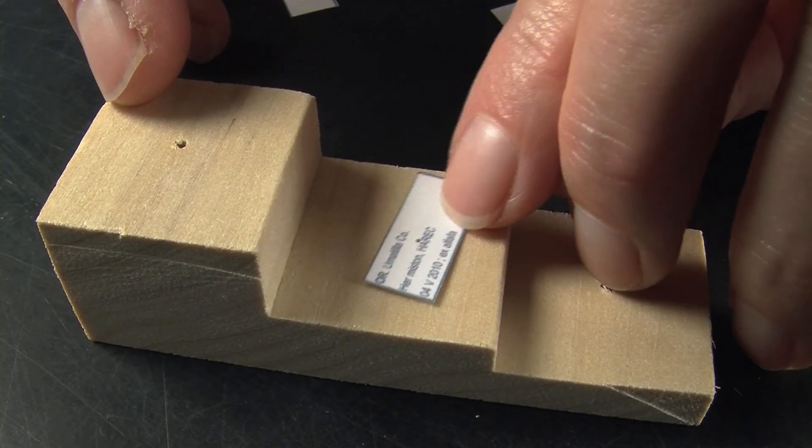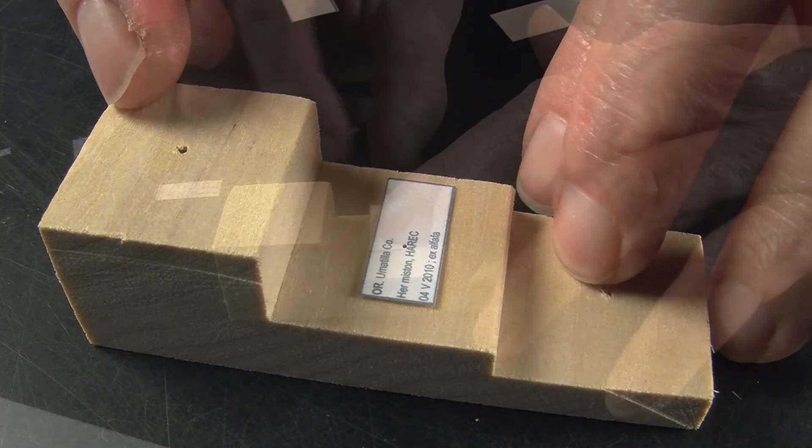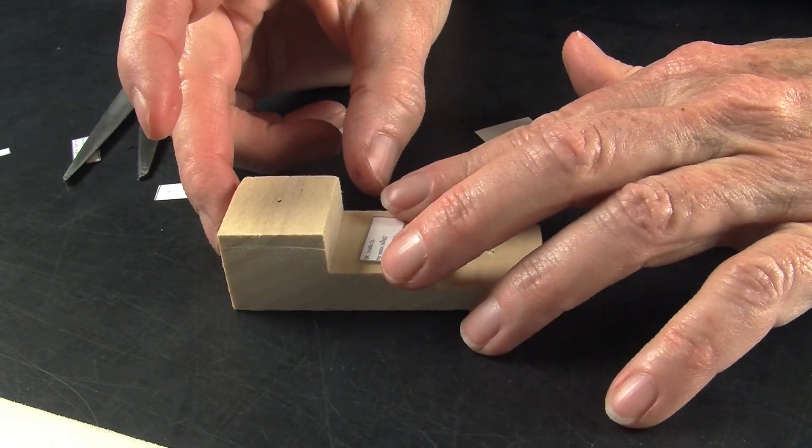Now we're going to label our insects with our label that we've cut. We're going to put it on the second layer of the pinning block and take our insect. This is a larger insect, so for that we will pin right in the middle of the label.